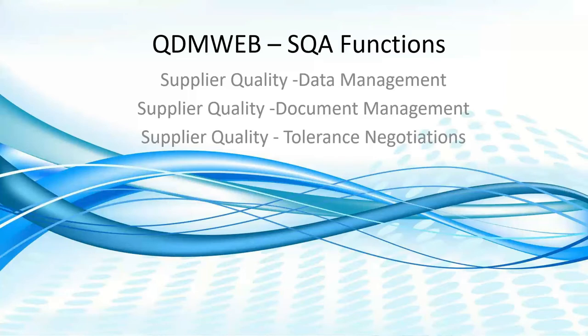A very common topic when we talk about OEMs and suppliers — or suppliers and their sub-suppliers — is that there is always a negotiation when a design is submitted and they make the process. Their process may not fit, or they might have to make process adjustments. Tolerance concessions need to be provided. There is a wide range of activity between an SQA, a supplier quality engineer, and the supplier's contact. Those tolerance negotiation sessions are handled by a tool built within QDM, which is a huge plus with the system.